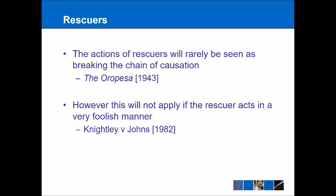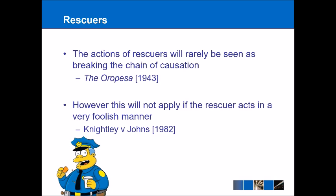However, in Knightley v Johns, the defendant had negligently overturned his car in a tunnel and the police wanted to shut off the tunnel. But the policeman was particularly negligent and drove down the wrong side of the road to try to close it down. A motorist crashed into the policeman, who suffered serious injuries. There was no way this could be said to be the fault of the defendant whose car had originally overturned — it was the responsibility of the policeman, who should have closed the tunnel in a safe and sufficient manner.